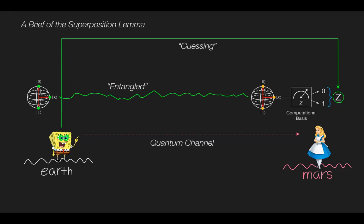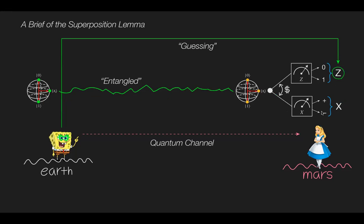Bob would like to guess the information of the random variable Xi. Since the quantum state is entangled with Bob's state,